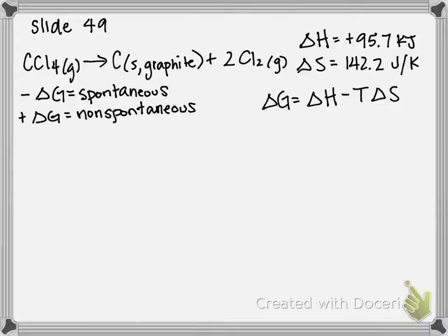So Gibbs free energy, if it has a negative sign, that means our reaction is going to be spontaneous. If it's got a positive sign, it means it's non-spontaneous. We're going to be using the equation delta G equals delta H minus T delta S.